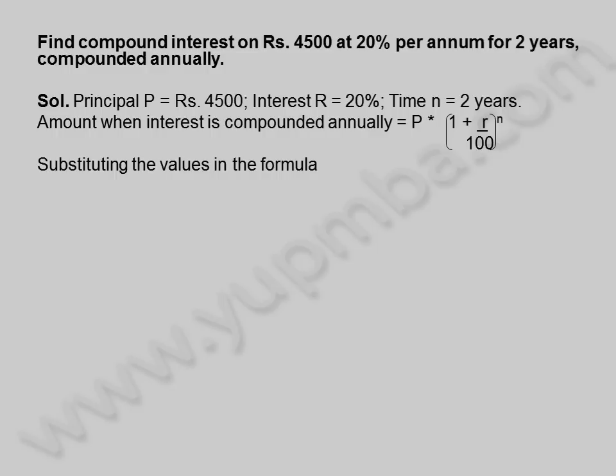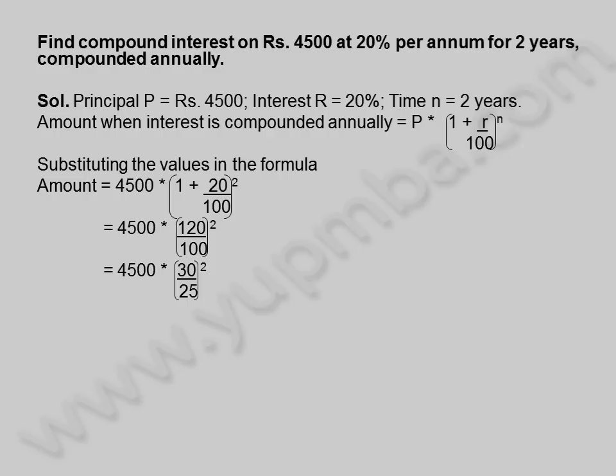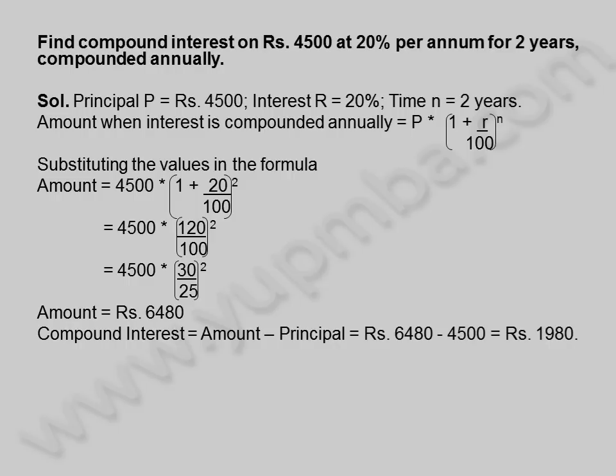Substituting the values in the formula. Amount is equal to 4,500 into 1 plus 20 by 100, whole square. Is equal to 4,500 into 30 by 25, whole square. Amount is equal to 6,480 rupees.